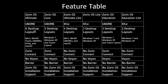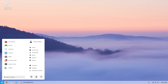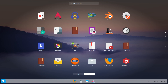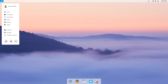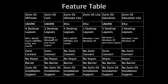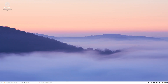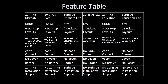Zorin OS Ultimate ships with a Windows 7 layout, a Windows XP layout, a touchscreen layout, a GNOME 3 layout, a Unity layout — or more accurately modern Ubuntu GNOME — as well as a Mac OS layout. Regular Zorin OS Core just has Windows 7, Windows XP, and Touch layouts, and Education has the same layouts as Core. Ultimate Lite only ships with four layouts: Windows 7, Windows XP, GNOME 2, and Mac OS. Zorin OS Lite and Education Lite only ship with two: Windows 7 and Windows XP.